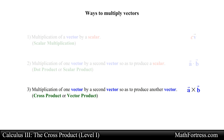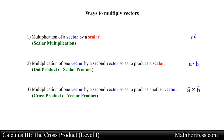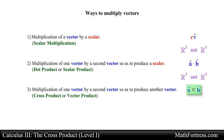The third way to multiply vectors is by multiplying one vector by a second vector so as to produce a third vector. What makes the cross product different from the first two methods is that the cross product is defined only for vectors in R³ and not R².